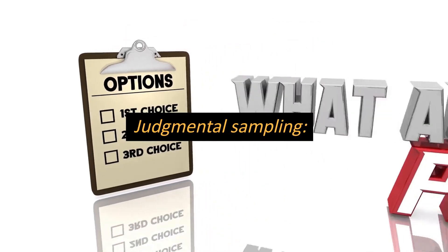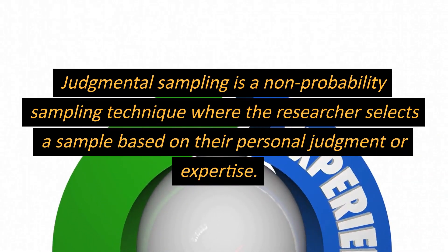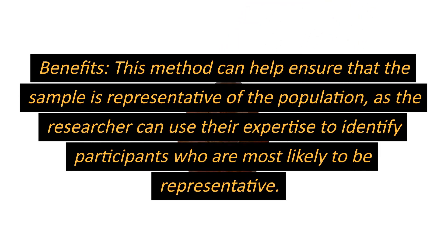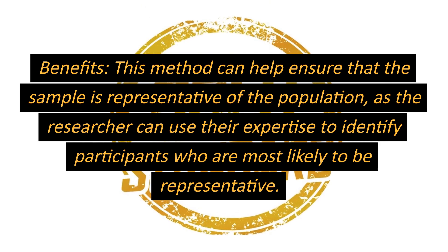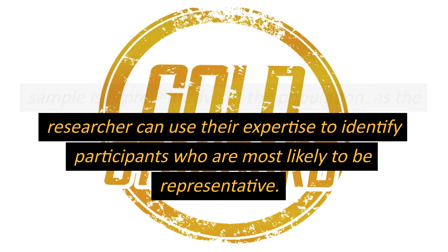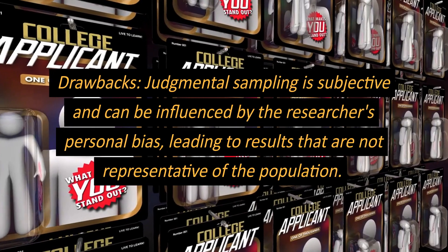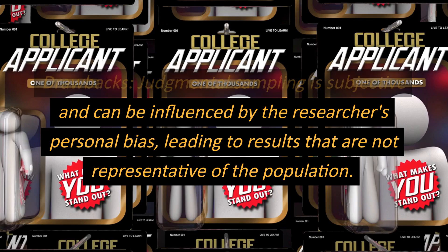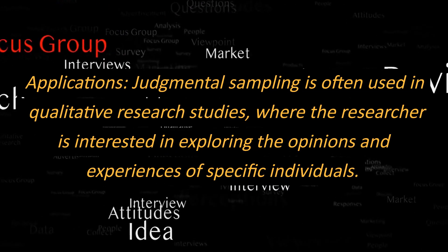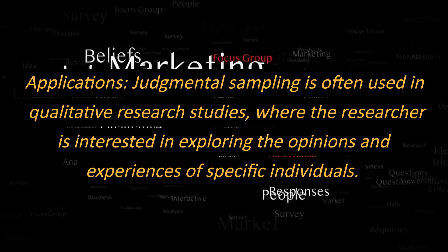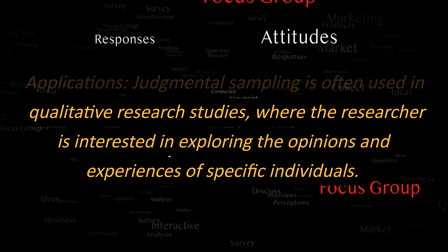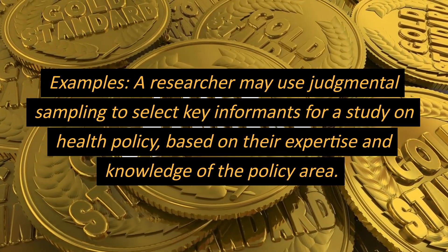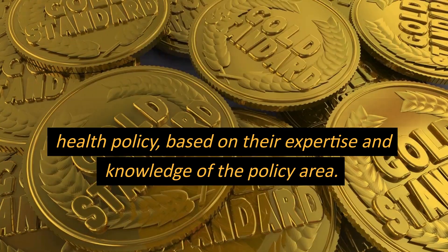Judgmental sampling is a non-probability sampling technique where the researcher selects a sample based on their personal judgment or expertise. Benefits: this method can help ensure that the sample is representative of the population, as the researcher can use their expertise to identify participants who are most likely to be representative. Drawbacks: judgmental sampling is subjective and can be influenced by the researcher's personal bias, leading to results that are not representative of the population. Applications: it is often used in qualitative research studies, where the researcher is interested in exploring the opinions and experiences of specific individuals. Example: a researcher may use judgmental sampling to select key informants for a study on health policy, based on their expertise and knowledge of the policy area.